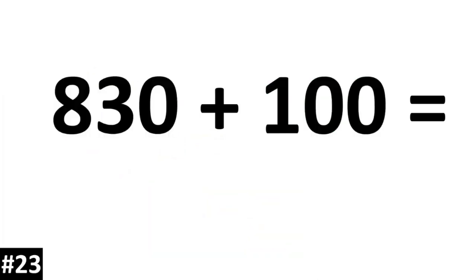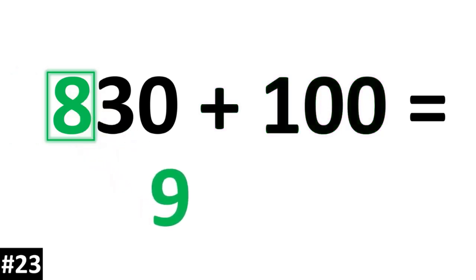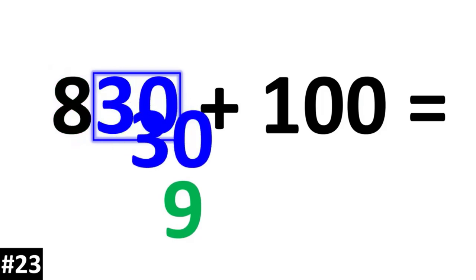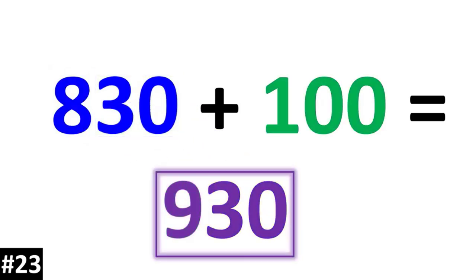830 plus 100. 830 has a hundreds digit of 8. That 8 becomes a 9. The other numbers stay the same, and we have 930.